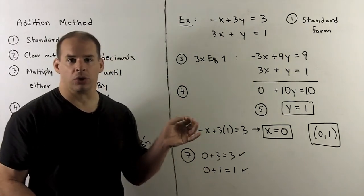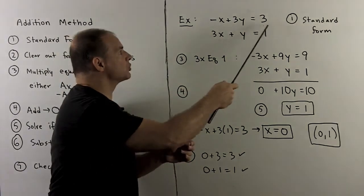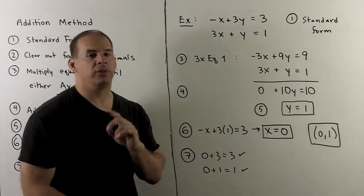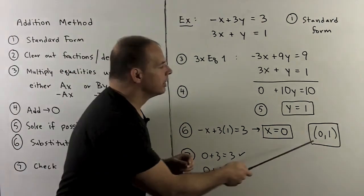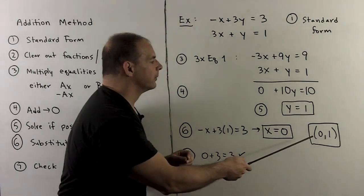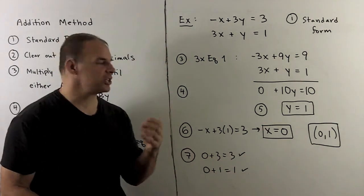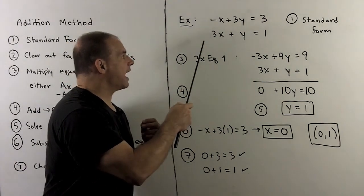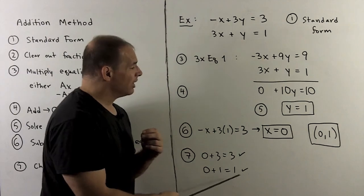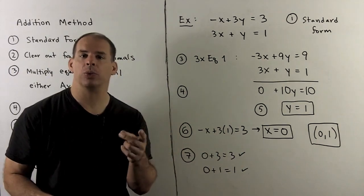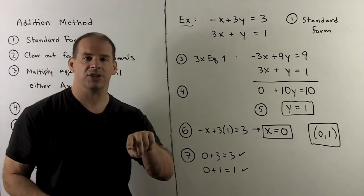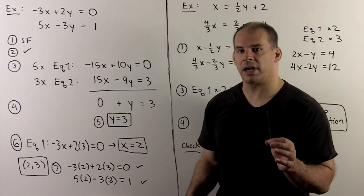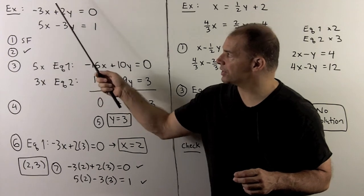From 10y equals 10 we isolate y to get y equals 1. Going back to the first original equation and setting y equal to 1, we get x equals 0. So we have the unique solution (0, 1). Checking: 0 plus 3 equals 3 — that checks; and 0 plus 1 equals 1 — that checks as well.